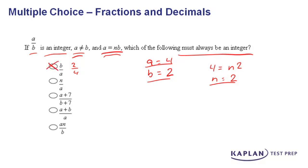When we go to answer choice B, n over a, that's going to be two over four again. And in this case, that's not an integer as well, so B is gone.